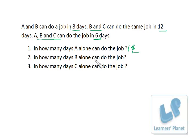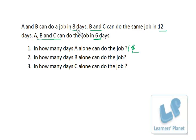Similarly, in how many days can B alone do the job? A and B can do the job in 8 days, and A alone can do the job in 12 days. That means in 8 days, A will be doing 8 by 12 — or 2/3 of the work. And since the work is completed in 8 days with A doing 2/3, that means B is doing 1/3 of the work. So B can do 1/3 of the work in 8 days, meaning B can do the entire work in 24 days.